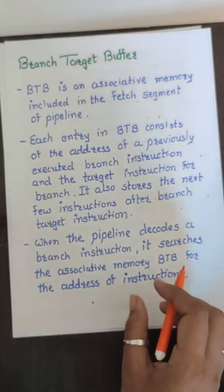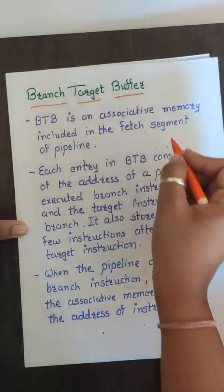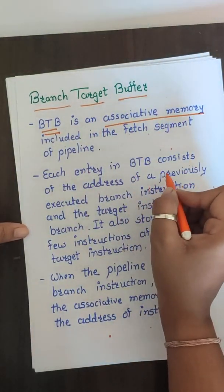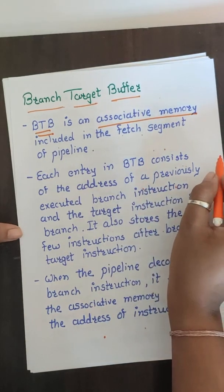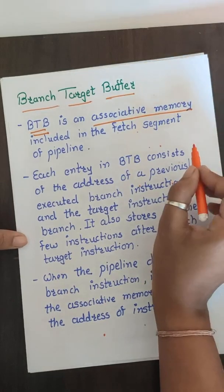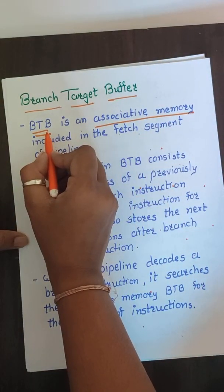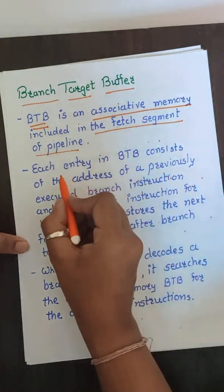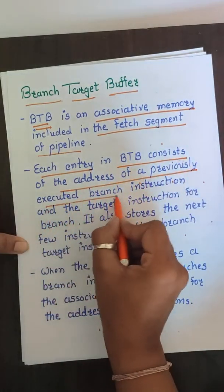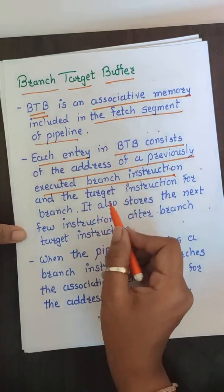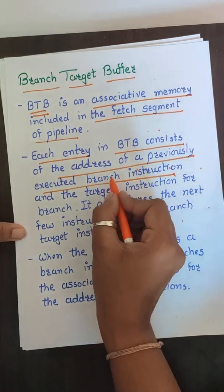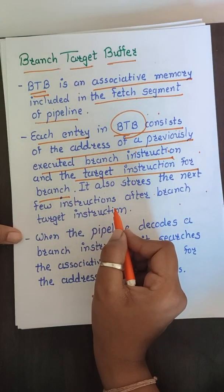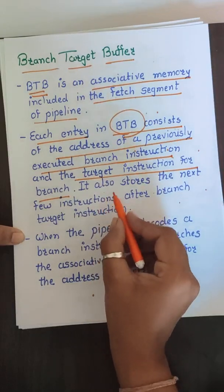The second option is the Branch Target Buffer, also known as BTB. BTB is an associative memory — as discussed in the memory organization chapter — used as a buffer included in the fetch segment of the pipeline. Each entry in the BTB consists of the address of a previously executed branch instruction, the target instruction for that branch, and also the next few instructions.